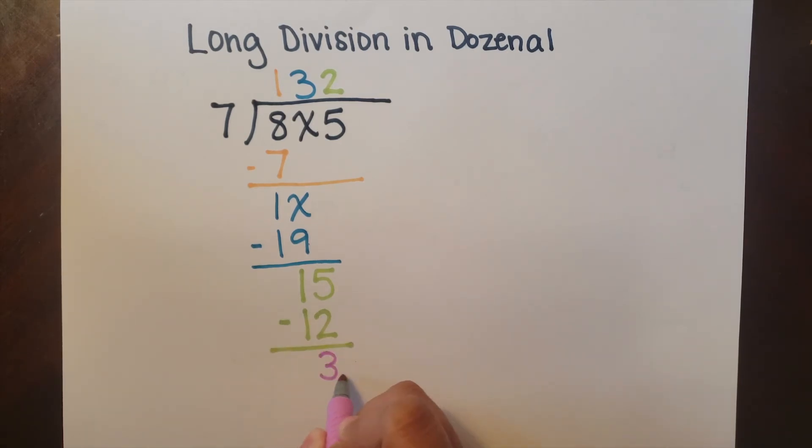And then depending on how I would like to solve the problem I could either say remainder three, or I could continue going and find the decimal places.